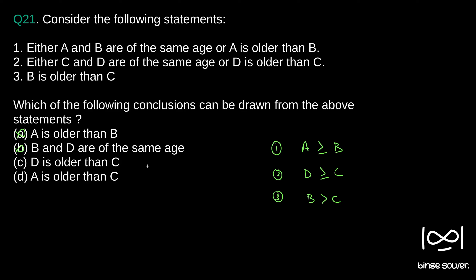Option C: D is older than C. Again, D can be greater than or equal to C — D can be equal to C also. So option C is wrong. The only option left is D, so D is correct.